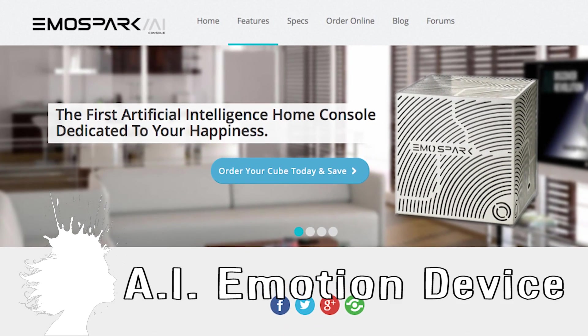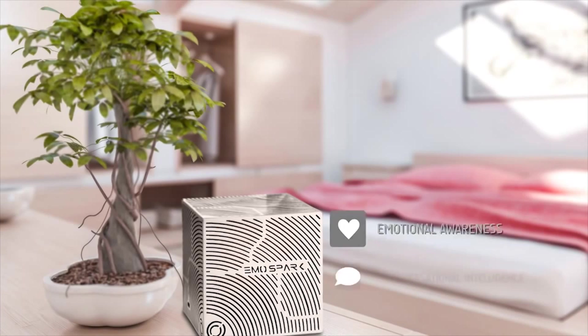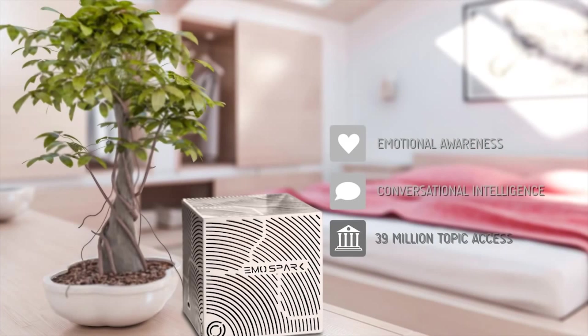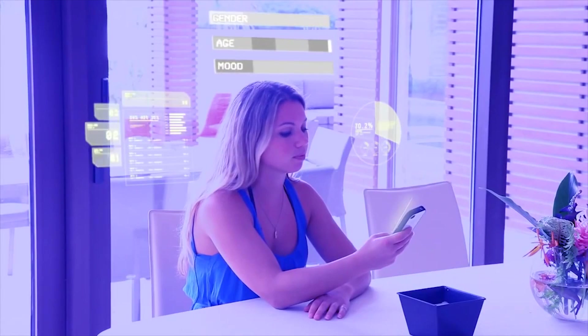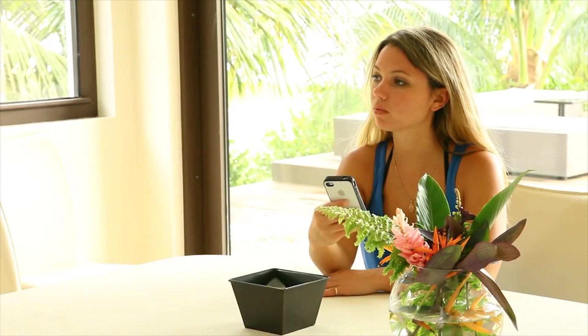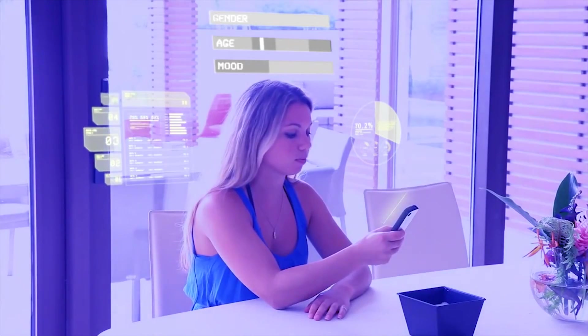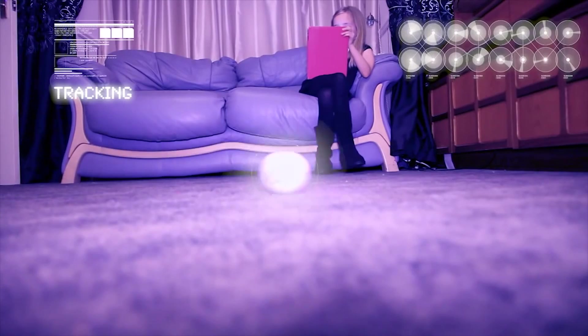EmoSpark claims to be the first artificially intelligent emotion device. It's an Android powered Wi-Fi cube that lets users interact through conversation, music and visual media. Over time the cube creates an emotional profile graph essentially allowing it to feel and express those emotions according to the user and seek joy and satisfaction from its owner. I feel happy.